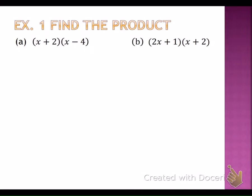Example number one says find the product. My first question — the first thing you want to check for — are we multiplying binomials in this problem in letter A? Yes. So if I'm going to use the FOIL method, what am I multiplying first? The F stands for the first terms, and in this case that's an x and an x, which gives us x squared. X times x is x squared — those understood ones get added together.